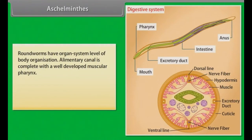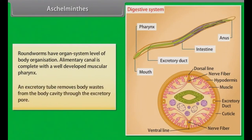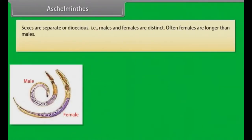Alimentary canal is complete with a well-developed muscular pharynx. An excretory tube removes body waste from the body cavity through the excretory pore. Sexes are separate, that is dioecious — males and females are distinct. Often females are longer than males.